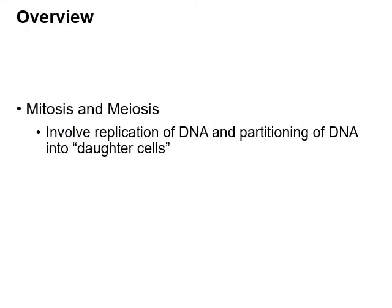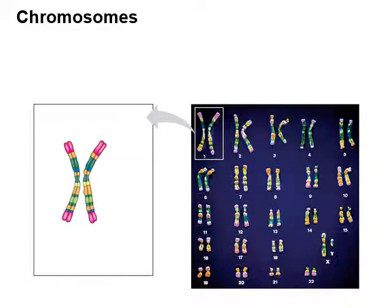Now you know why cellular reproduction is important. We're going to talk about what actually happens in two different processes: mitosis and meiosis, where cellular reproduction takes place. Both involve replicating DNA and then moving that DNA into two daughter cells. DNA replication is really important because it ensures that both daughter cells have all the DNA they need. Without replication, daughter cells would only have half the DNA required.